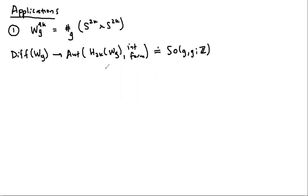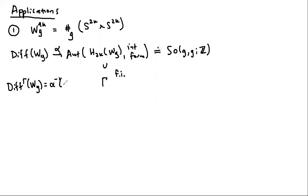If gamma is a finite index subgroup, I'll denote by Diff_gamma(W_g) the preimage alpha-inverse of gamma, where alpha is the map from the diffeomorphism group. This map is surjective, so if gamma is finite index you get a finite index subgroup of the diffeomorphism group. The main theorem tells you that you can find gamma with non-trivial cohomology.